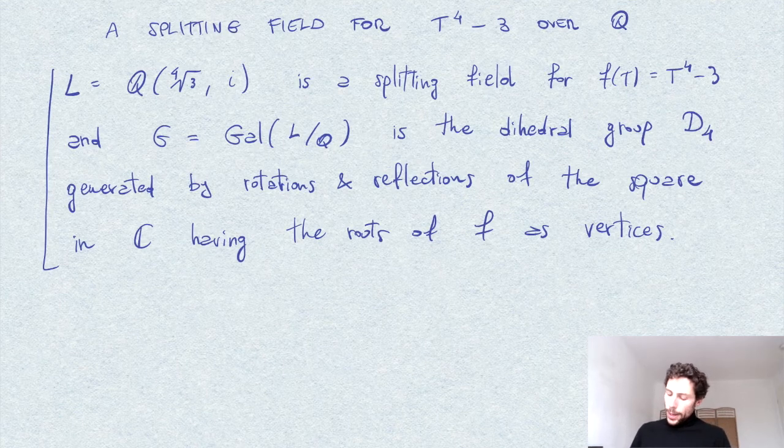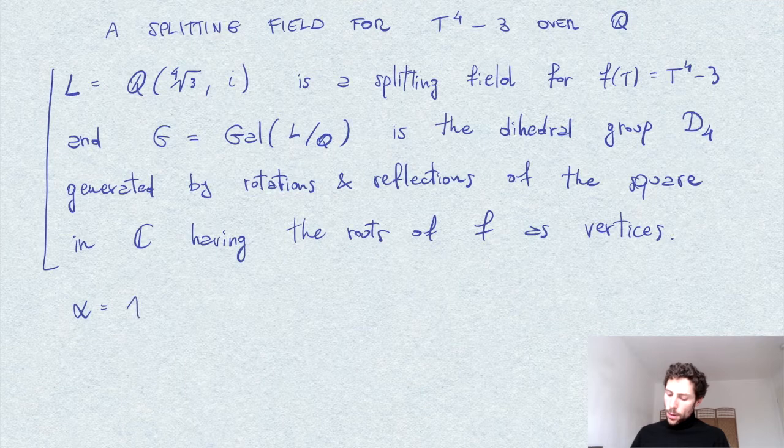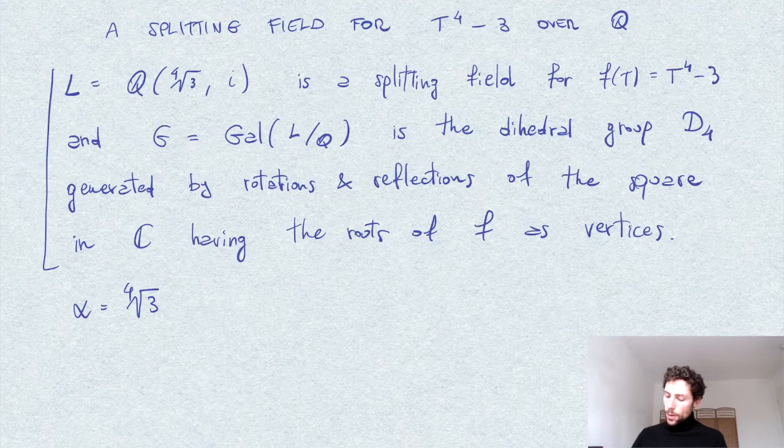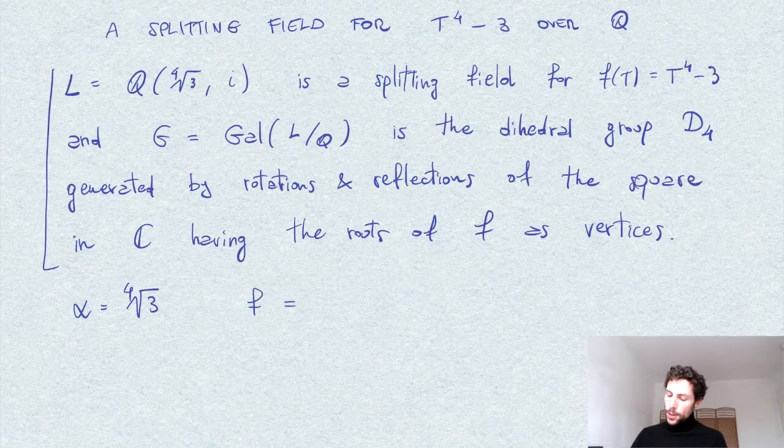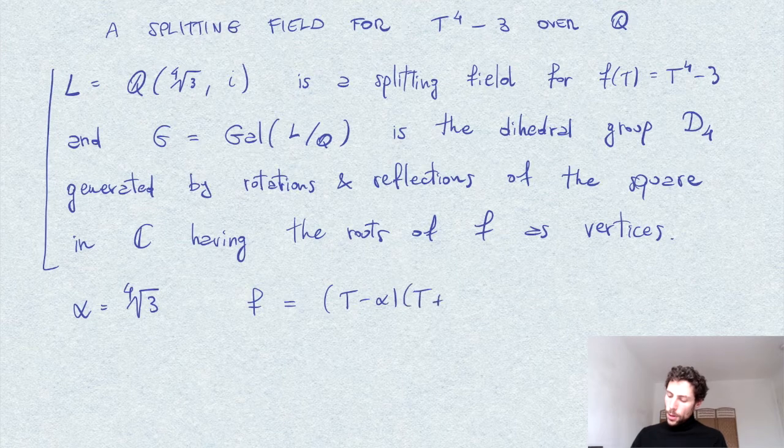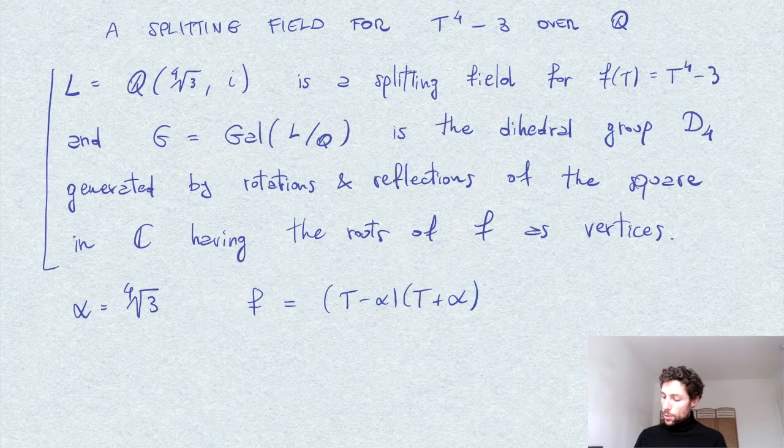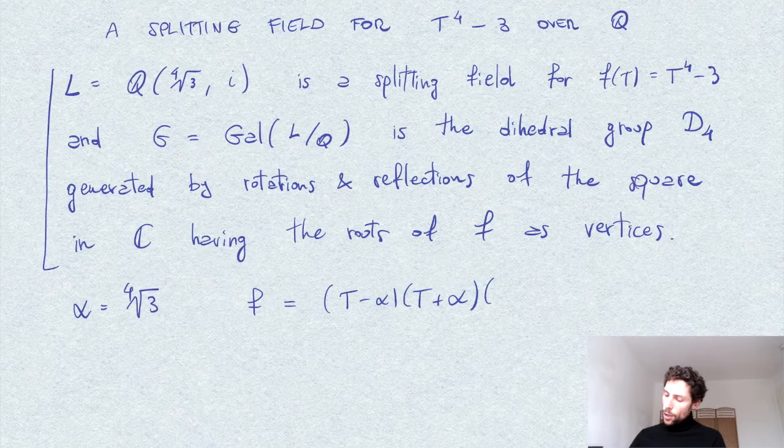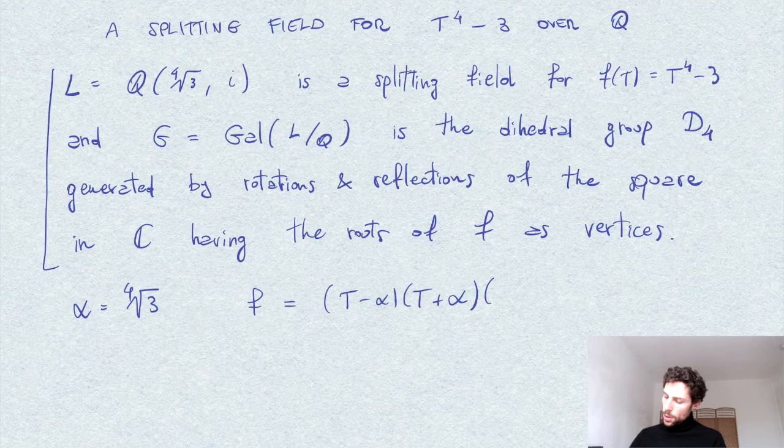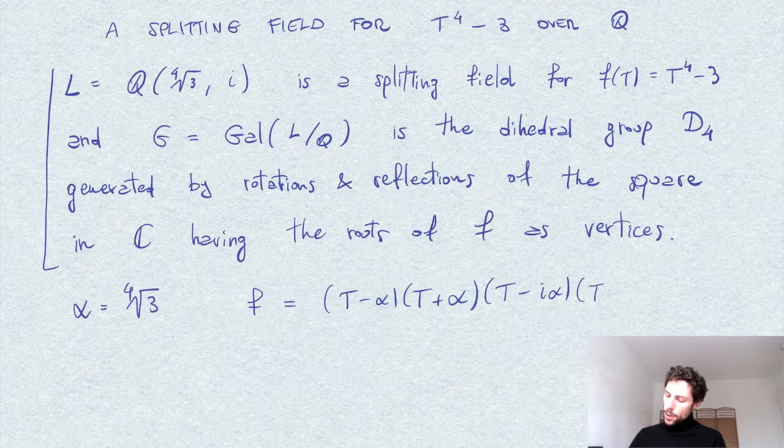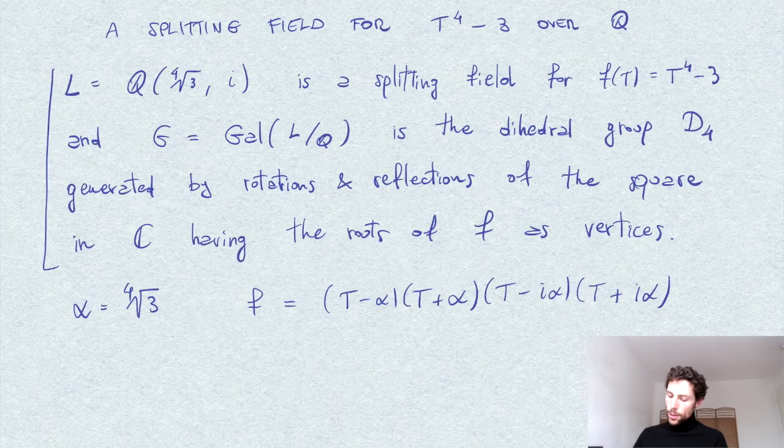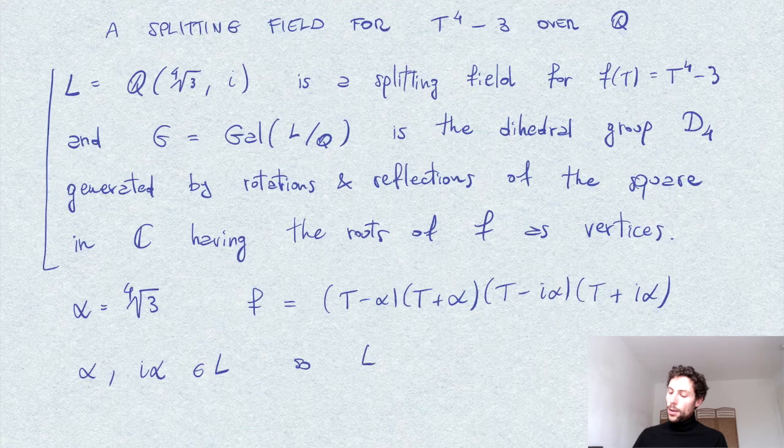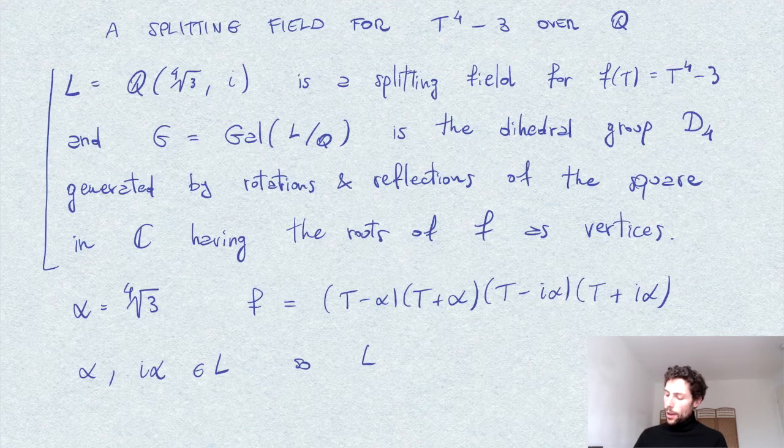So let me denote by alpha this element here, the fourth root of 3. And it's clear that f can be split as the polynomial (t minus alpha)(t plus alpha), has alpha and minus alpha as roots, but also i alpha and minus i alpha. It's an even polynomial so it will have even sets of roots. So this is (t minus i alpha)(t plus i alpha). So in particular, obviously i alpha and minus i alpha are in L, so L is a splitting field in the sense that f totally splits into this extension.